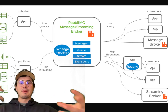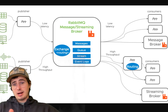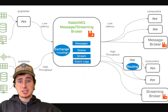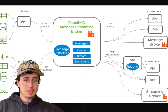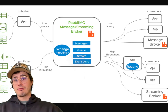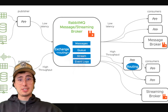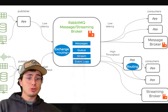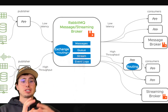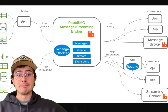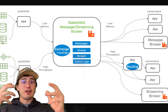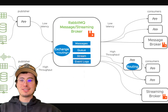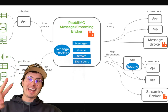Your choice between Kafka and RabbitMQ ultimately depends on the specific requirements of your application. Kafka excels at high-throughput, durable, real-time streaming and processing use cases, whereas RabbitMQ is better suited for task queues and traditional messaging patterns. I hope you've learned something today and figured out what's best for your use case. Data guy out.